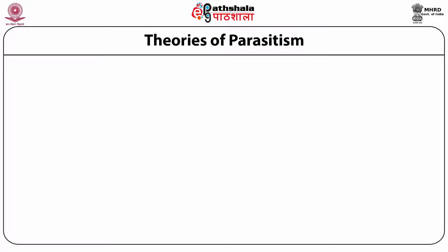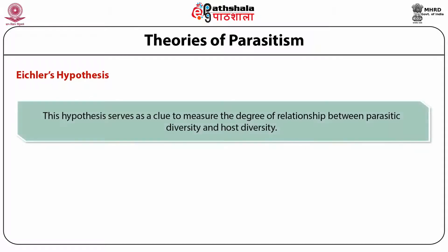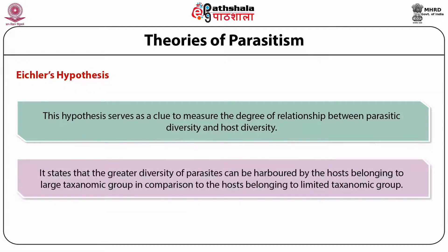3. Eckler's hypothesis: this hypothesis serves as a clue to measure the degree of relationship between parasitic diversity and host diversity. It states that greater diversity of parasites can be harbored by hosts belonging to a large taxonomic group in comparison to hosts belonging to a limited taxonomic group.